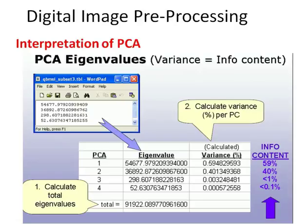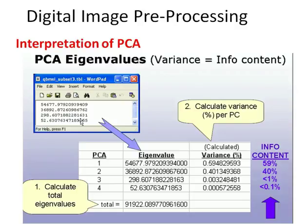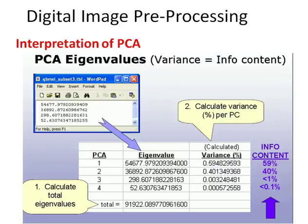Here's an example of what this output looks like from a principal components analysis in Imagine. If you open the output eigenvalue file, you're just given a list of numbers, and each refers to each of the principal components bands — PC1, PC2, PC3, PC4, and so on. To figure out how much variability is accounted for by each band, you calculate what proportion of the total variability each band represents. I've put this in Excel: if I take a band's eigenvalue and divide it by the total, that gives me the proportion of variance accounted for by that band.